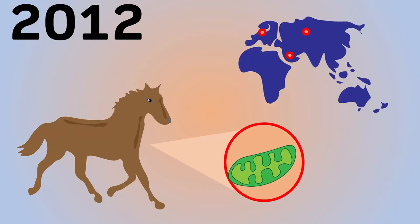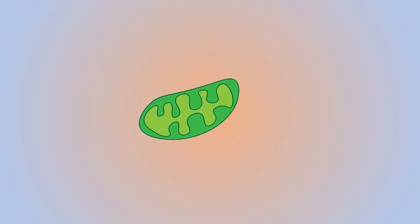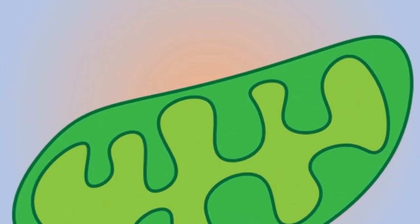To start, it's worth explaining why we focus on mitochondrial DNA when trying to trace evolutionary history. Mitochondria, crucially, possess their own genome, distinct from the larger organism's genome.